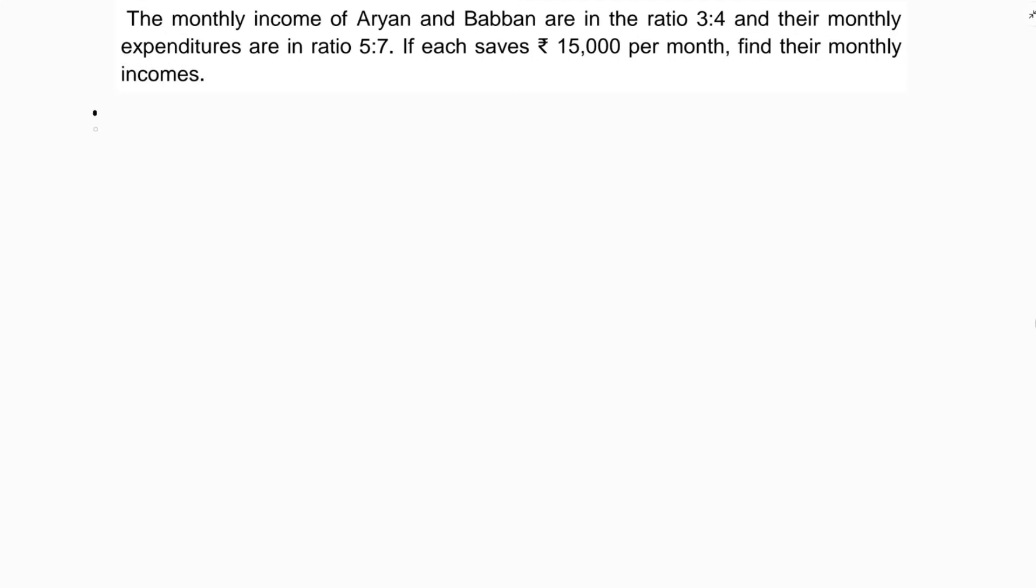Let the incomes of Aryan and Babban be 3x and 4x respectively, since they are in the ratio 3 is to 4.